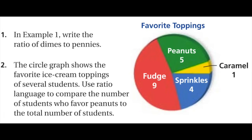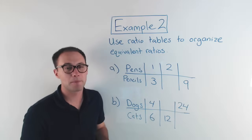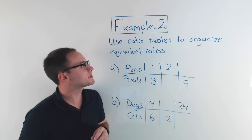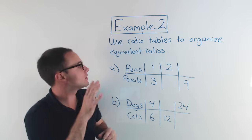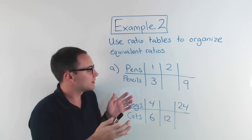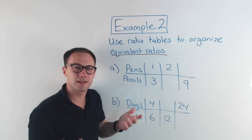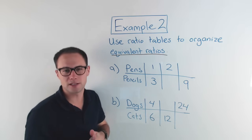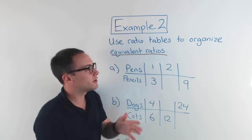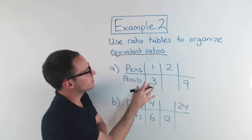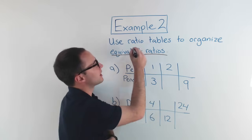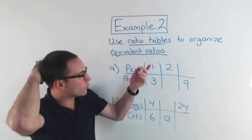Here's one to try on your own. Example two: use ratio tables to organize equivalent ratios. We're going to talk about more with equivalent ratios right here. Like we said in the first example, it's basically like simplifying fractions — you can have equivalent fractions and you can also have equivalent ratios. We're going to use a ratio table to help us organize those.